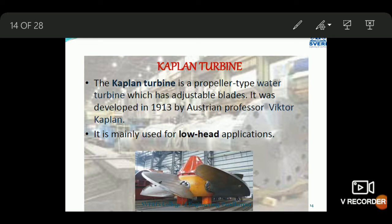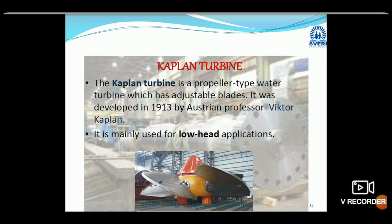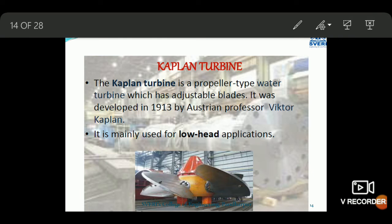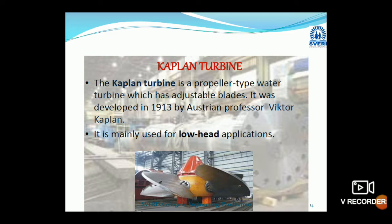Next we discuss the Kaplan turbine. The Kaplan turbine is a reaction type of turbine in which water flows in the axial direction — along the axis of the turbine. It is a low head turbine developed by Austrian professor Viktor Kaplan. In the diagram, the yellow portion is called the hub, on which adjustable blades are mounted. If the blades are adjustable, the turbine is called a Kaplan turbine; if the blades are fixed to the hub (also called boss), then it is called a propeller turbine.